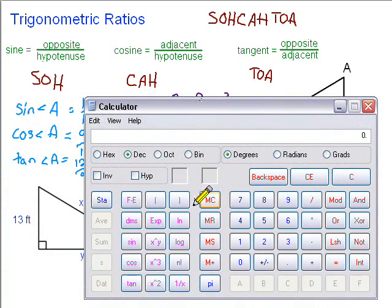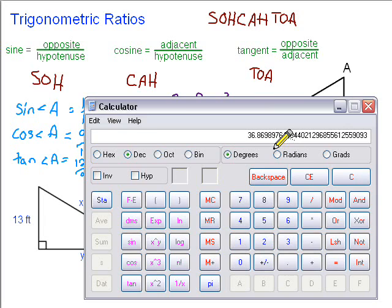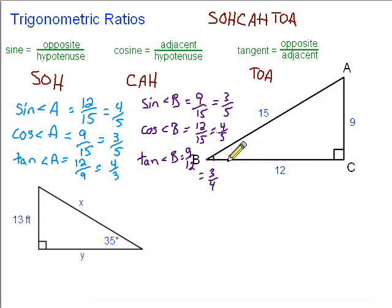So we've got 3 fifths — pop that into the calculator, 3 over 5, which gives us a decimal. To find the angle measure, we're going to use the inverse because we're going backwards here. Click the inverse button, then inverse sine. We get 36 point something — lots of decimals. Just round to the nearest tenth, so it would be 36.9 degrees — that's the measure of angle B.